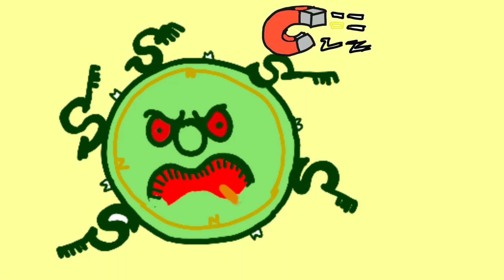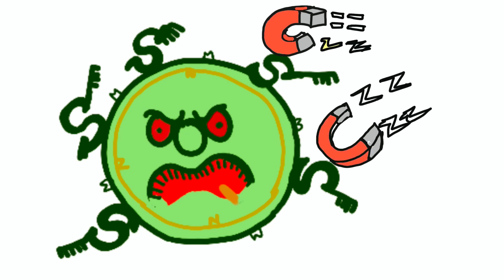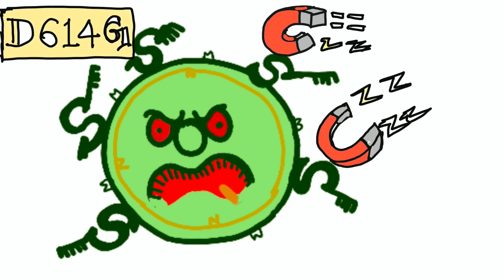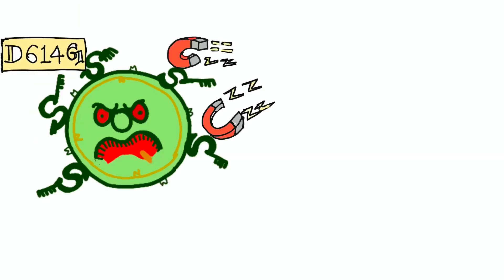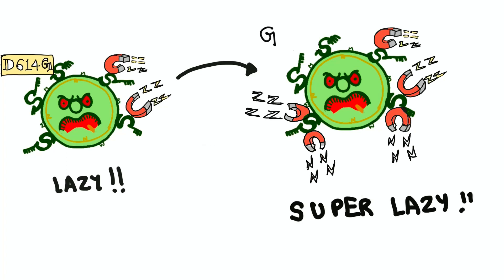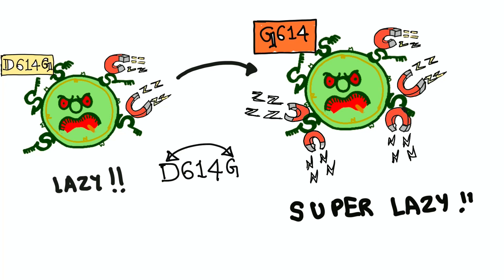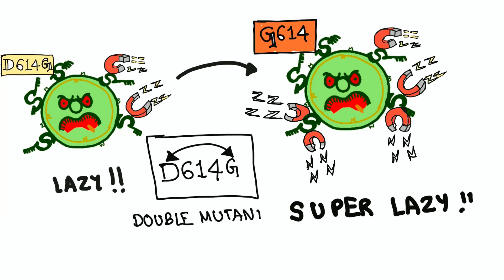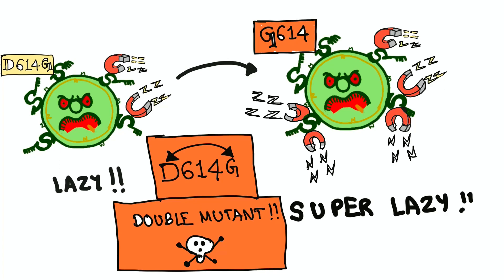The virus develops multiple magnets on the surface of the S protein so they get attracted to that lock, the ACE2 receptor. This is the D614 spike. Then this lazy virus got super lazy by acquiring more magnets on the S protein surface, creating the G614 spike — thus two mutations happened. This is the D614G double mutant, also called the desi mutant, which is circulating in more areas of Maharashtra.